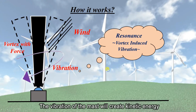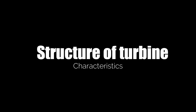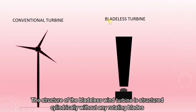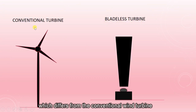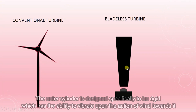The vibration of the mass will create kinetic energy, and this energy will be transformed into electrical energy in the generator. The structure of the bladeless turbine is structured cylindrically without any rotating blades, which differs from the conventional wind turbine. The outer cylinder is designed specifically to be rigid, which has the ability to vibrate upon the action of wind towards it.